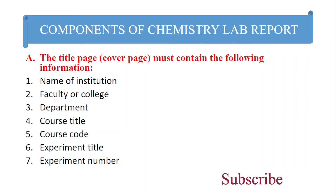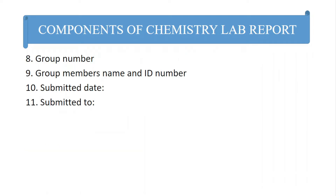The seventh item is the experiment number — whether it is your first, second, or third experiment. Just write the number in front of it: if it is the first experiment, write 1; if it is the second, write 2, and so on. The next item is the group number.